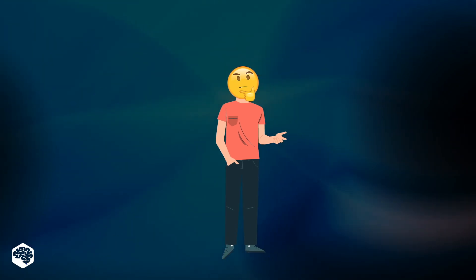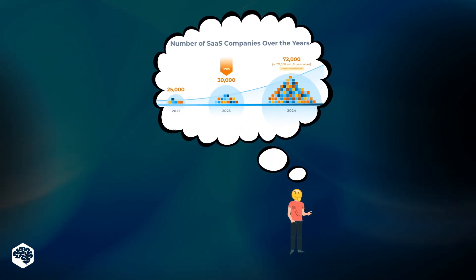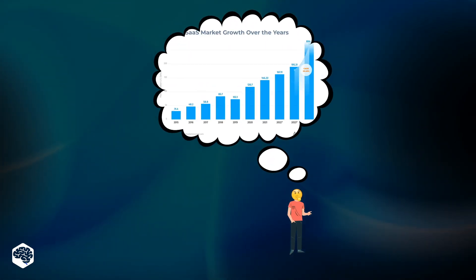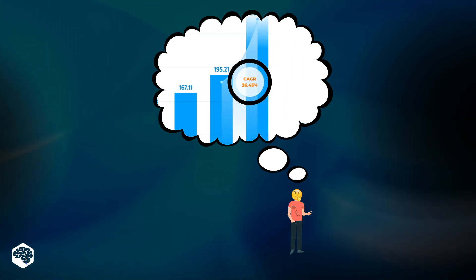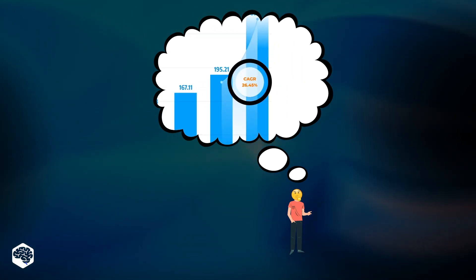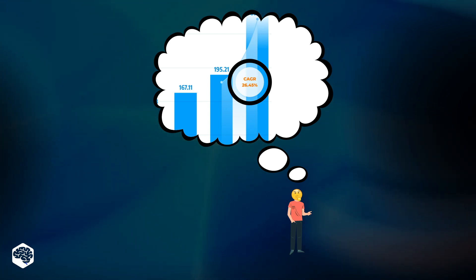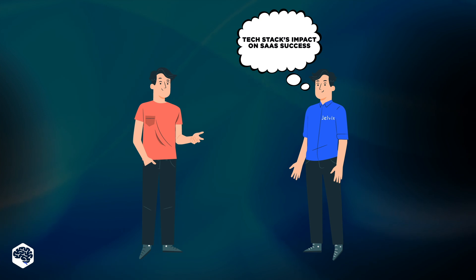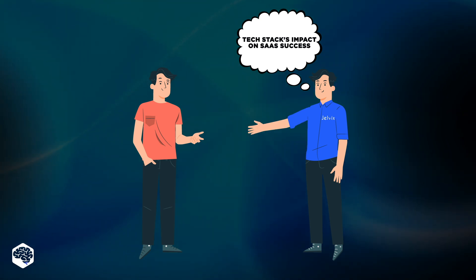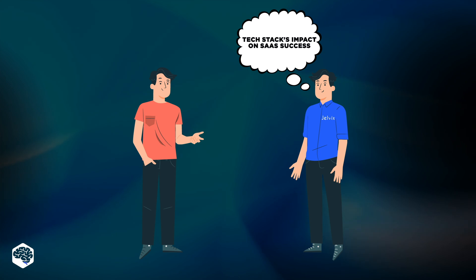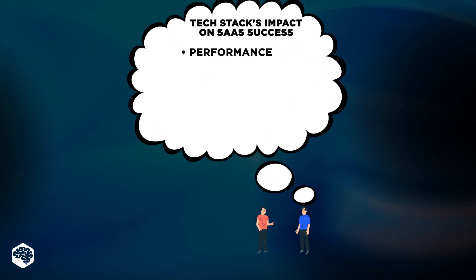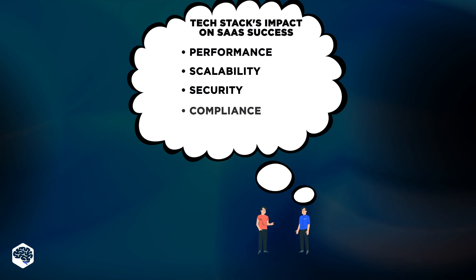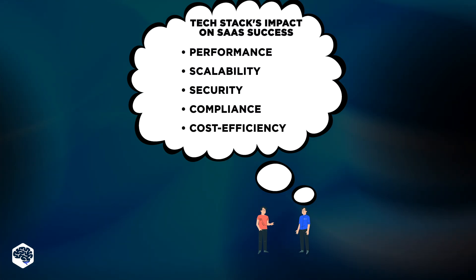If you've decided to leverage a SaaS product, no wonder — the SaaS market is expanding rapidly. Over the last year alone, it reached a CAGR of 26.4%, and it's expected to further grow at a CAGR of 18.82% by 2030. A well-suited tech stack plays a vital role in the success of an emerging SaaS product, with direct effect on performance, scalability, security, compliance, and cost efficiency.